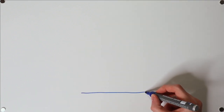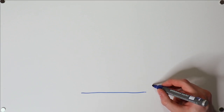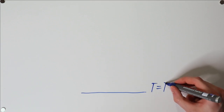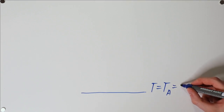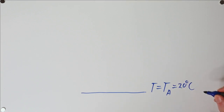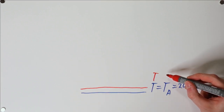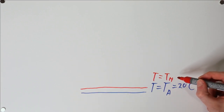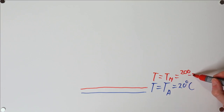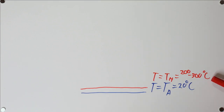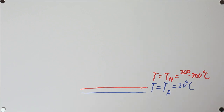Let's first consider one layer that has been laid down by the printer, and let's assume that that layer has cooled down all the way to the ambient temperature, which is going to be roughly 20 degrees Celsius for an unenclosed printer. Now the hotend comes along and drops down a new layer, and that layer will be slightly below the hotend's temperature, roughly 200 to 300 degrees Celsius, depending on what material you're printing and what the exact blend is, though it could go even higher.